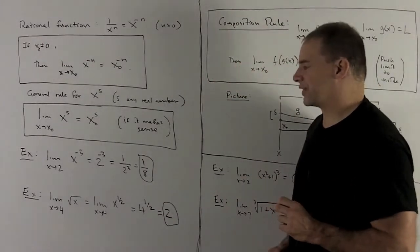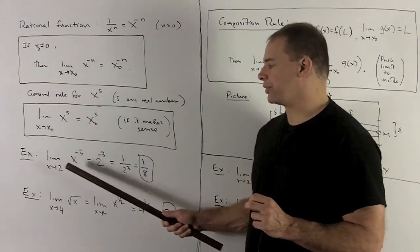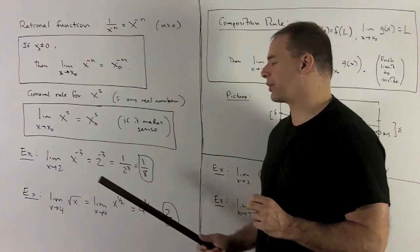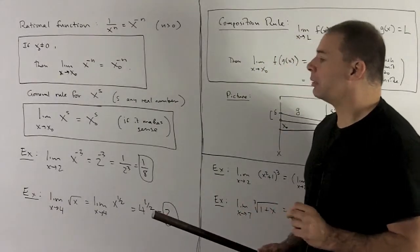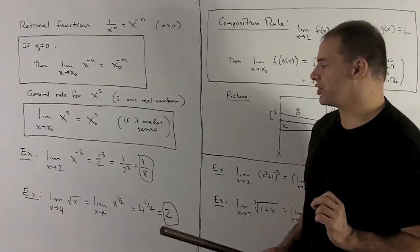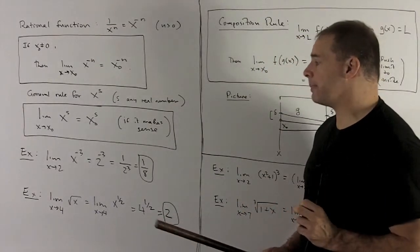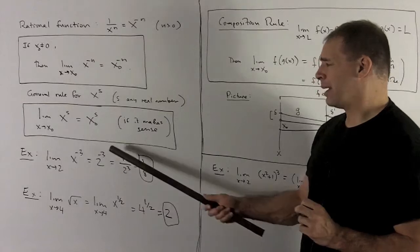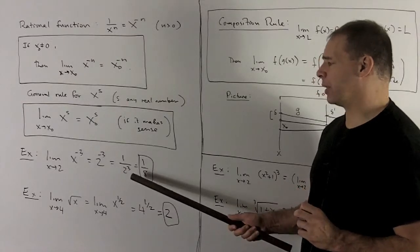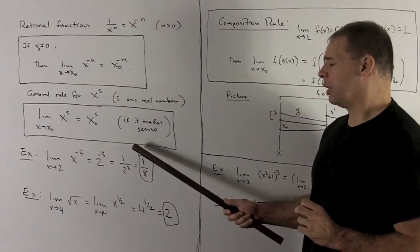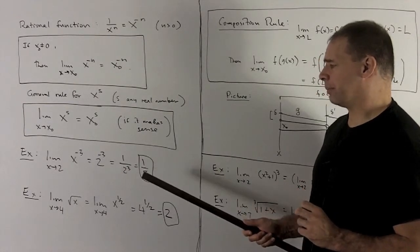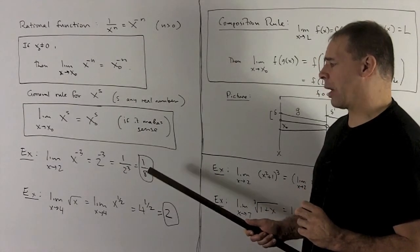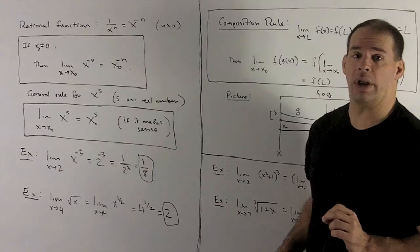Example: the limit as x goes to 2 of x to the minus 3. The rule says just stick your number in. So, 2 to the minus 3 — the minus sign says put it in the bottom — 1 over 2 to the third power gives me 1/8.